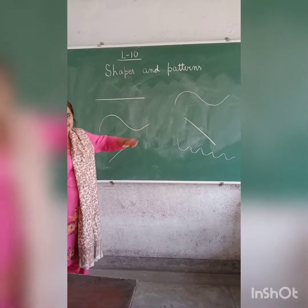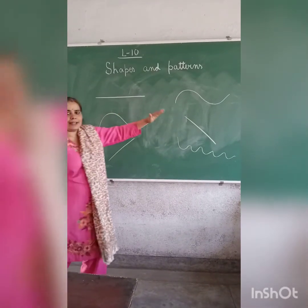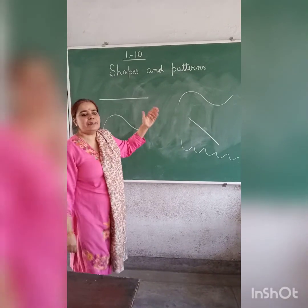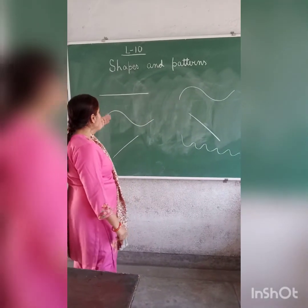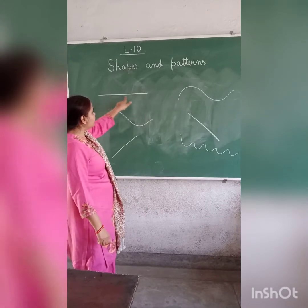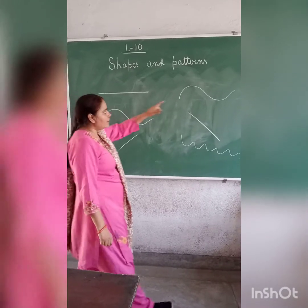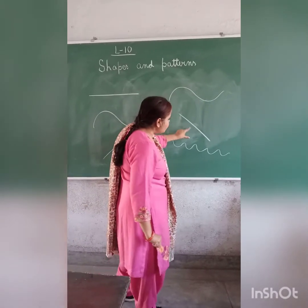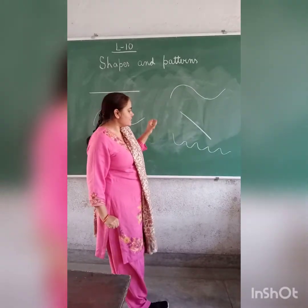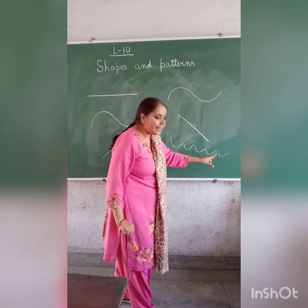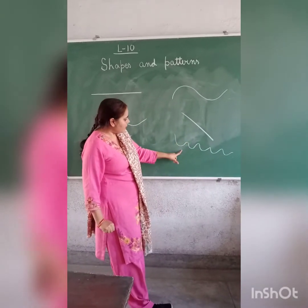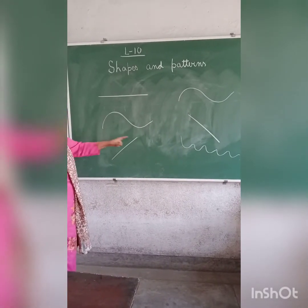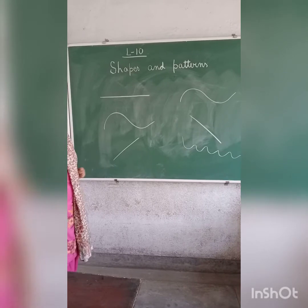All these are lines, but are they the same? No, they are not the same. What is the difference? Can you see? This is a straight line. This is a curved line. And this is a straight line. This is a curved line. And this is also a curved line. But this one is a straight line.